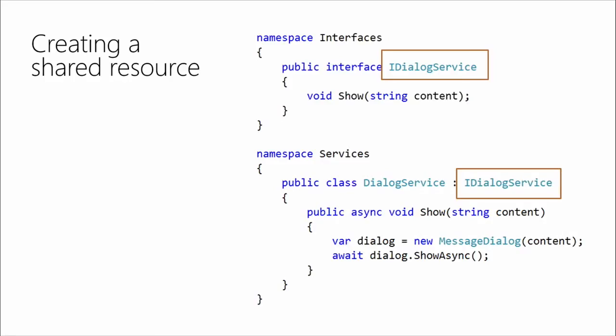Let's talk about something that we might reuse. In this case, it's a shared resource — a dialog service. It's a public DialogService implemented, and we've inherited from IDialogService. It has a simple interface that defines what that class does.